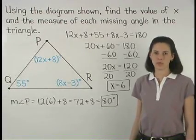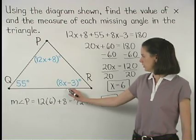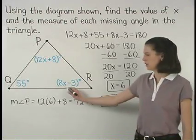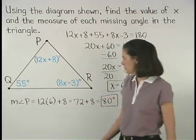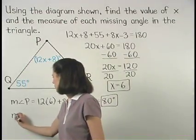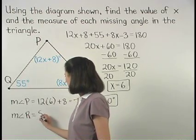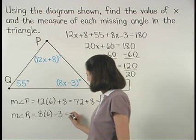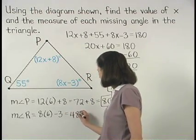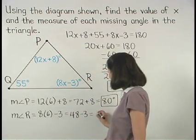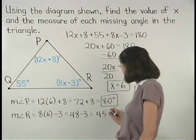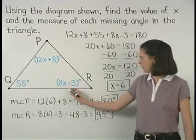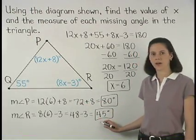And remember that the measure of angle R is 8x minus 3, so if we plug a 6 in for x, then for the measure of angle R, we have 8 times 6 minus 3, which is 48 minus 3, or 45 degrees.